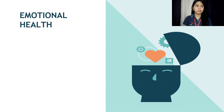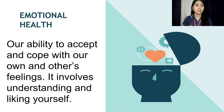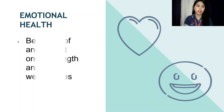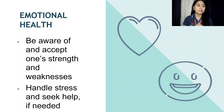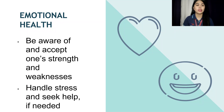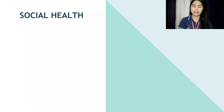Let's proceed to Emotional health — our ability to accept and cope with our own and others' feelings. It involves understanding and liking yourself. To attain emotional health, be aware and accept your strengths and weaknesses. It is very important to know our limitations. It's okay to challenge yourself sometimes, but you have to know when to stop. Handle stress and seek help if needed. It's okay not to be okay — expressing how you feel helps a lot in handling stress.